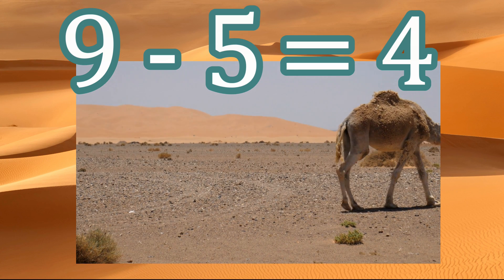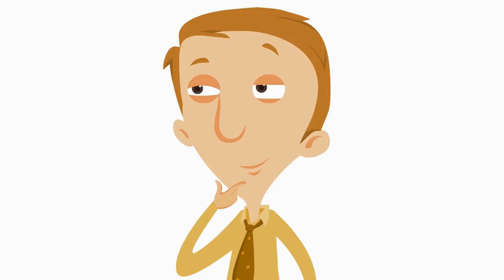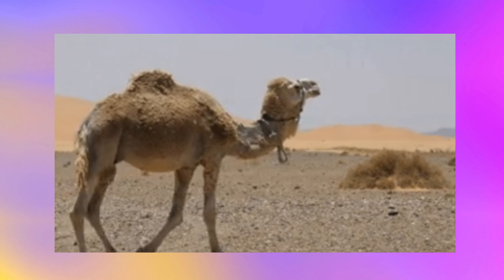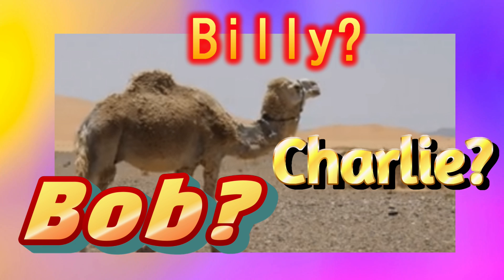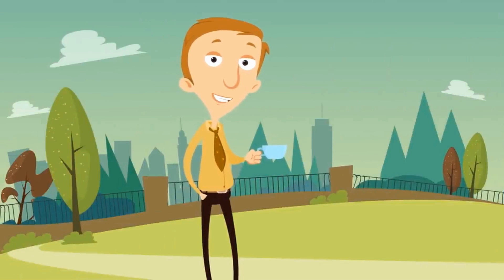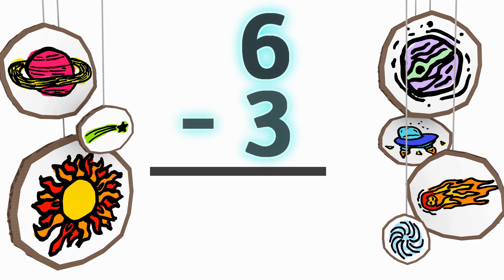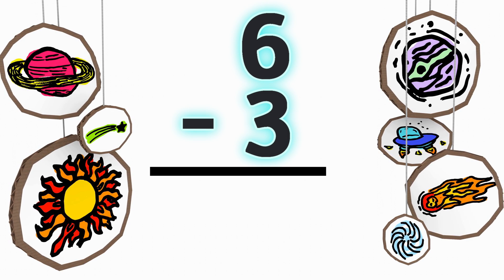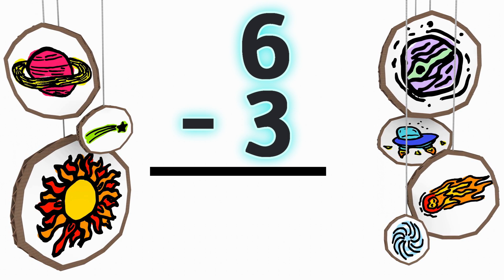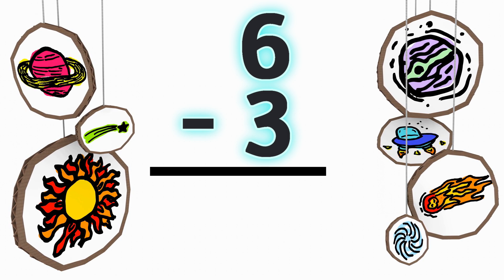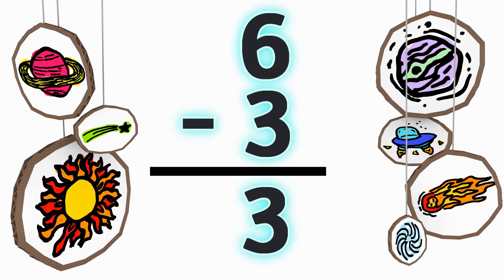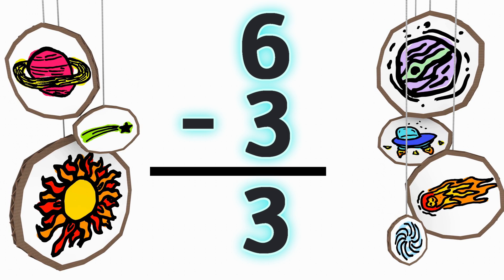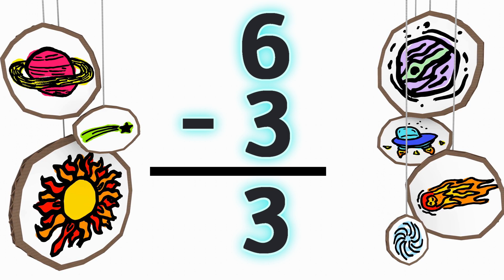Wait, I never caught the camel's name. Billy? Charlie? Bob? Is your name Bob? Okay, let's try some more — this is fun. Do you know what six minus three is? Yes, six minus three equals three. If you have six and take three away, you only have three left. Well done.